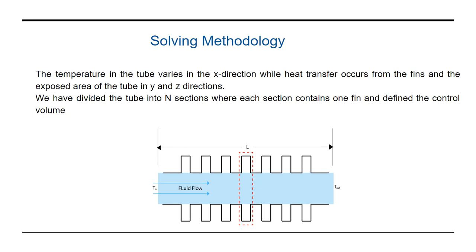We have taken half of the fin on each side of the tube in the control volume of a section. Assuming that the temperature of the fluid is constant in the ith section Ti, we will work with this control volume in the first part of our solution, and then using an iterative finite difference method with a code in MATLAB.